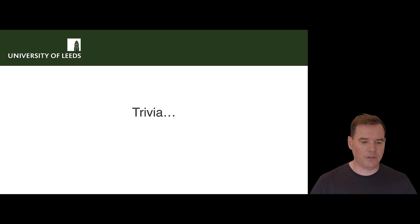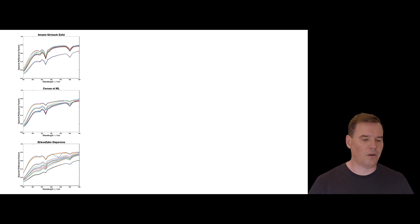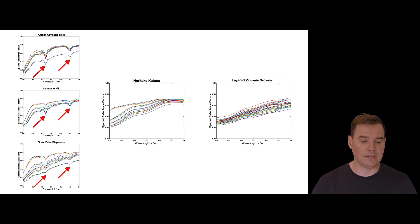Another bit of trivia for you is that when we looked at the spectral reflectance factors of these monolithic milled zirconia restorations, we noticed that there were these divots, these peaks here in the reflectance values of these materials. And they were quite distinct. And all of these manufacturers seem to have them with very few exceptions. So we had these dips in the spectrum at around 520 nanometers and again at around 655 nanometers. And when we compared this with other materials like the Katana STML from Naritake, for instance, they had very smooth curves. And so did the layered zirconia crowns. So these dips weren't present.